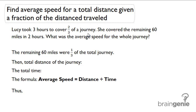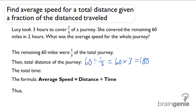The remaining 60 miles were one-third of the journey, so we can figure out the total distance. The total distance had to have been 60 divided by one-third, which is the same as 60 times 3, which is 180 miles.